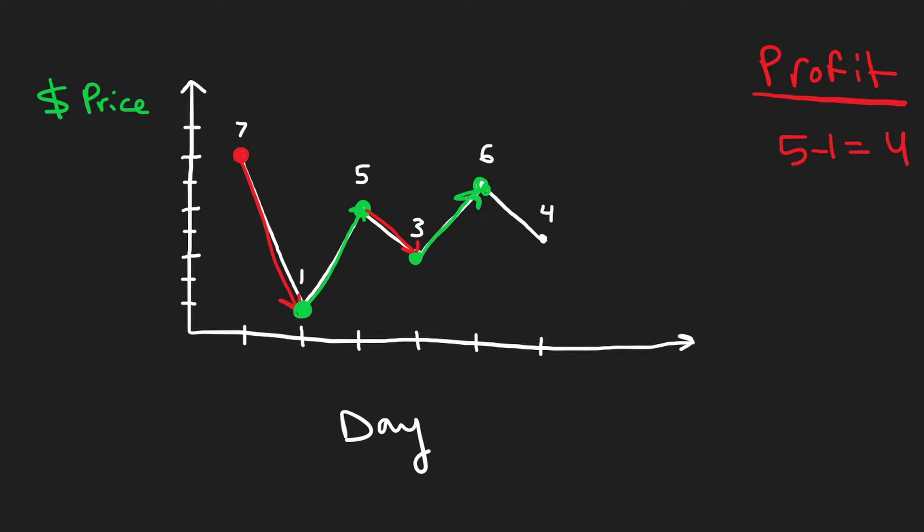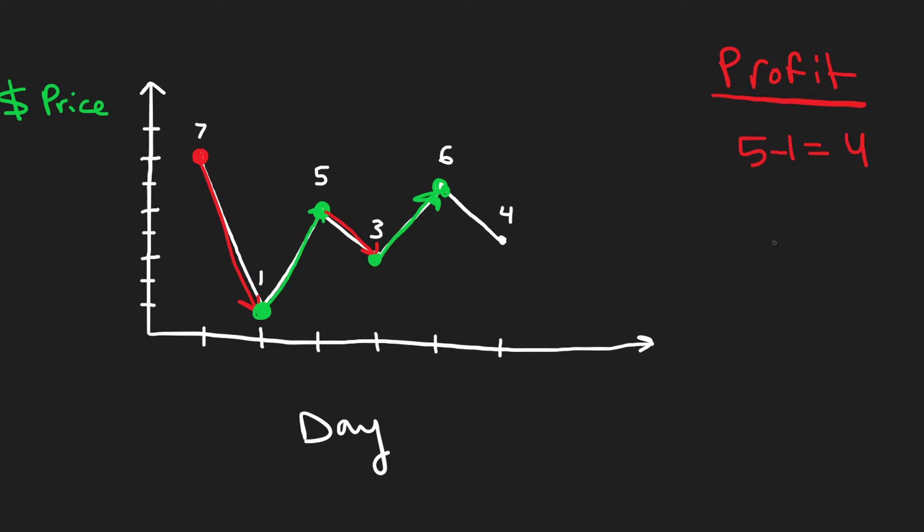And once again, we predict the future. We know the stock's about to go down. This is the maximum. Since we see the next value is smaller than the current value, we definitely sell now. So we bought here. We sold here. That's six minus three. And that's another profit of three. So the total profit so far is seven.